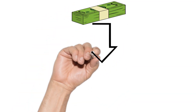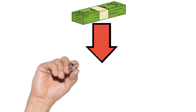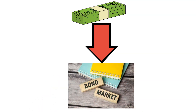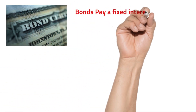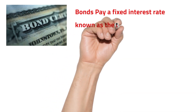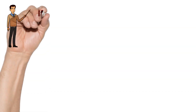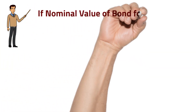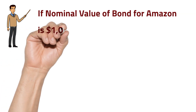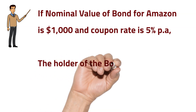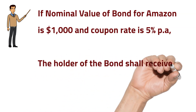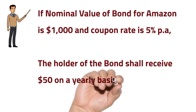These funds can be raised through the bond market. Basically, bonds pay a fixed interest rate, known as the coupon rate. For instance, if the nominal value of a bond — let's say for Amazon — is $1000 and the coupon rate is 5% per annum, the holder of the bond shall receive $50 on a yearly basis.